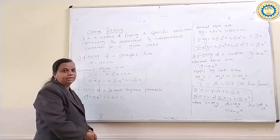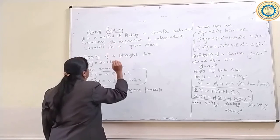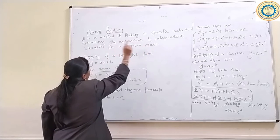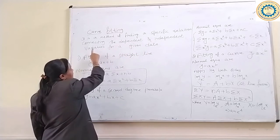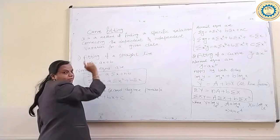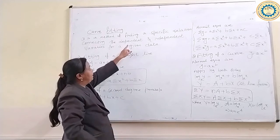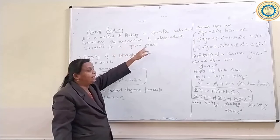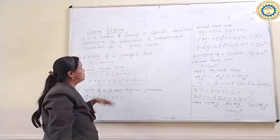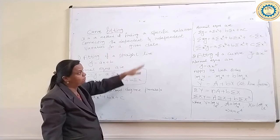Dear students, today let us discuss about curve fitting, which is module 4. It is a method of finding the specific relation connecting the dependent and independent variables for a given data. Dependent variable means Y, independent variable means X. In curve fitting, we have three types.